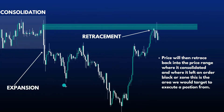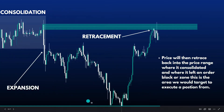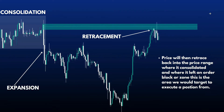After the expansion, we have the retracement. Price will then retrace back into the price range where it consolidated and where it left an order block or zone. This is the area we'd target to execute a position from. When price is retracing back up, it retraces to fill in the imbalance where it expanded out of.